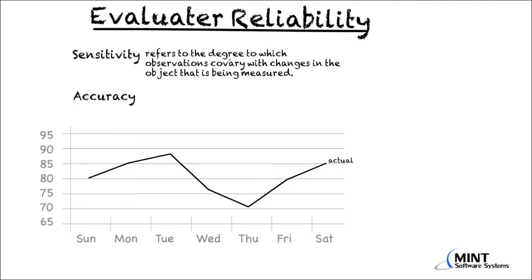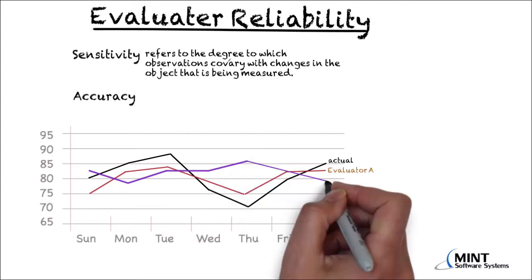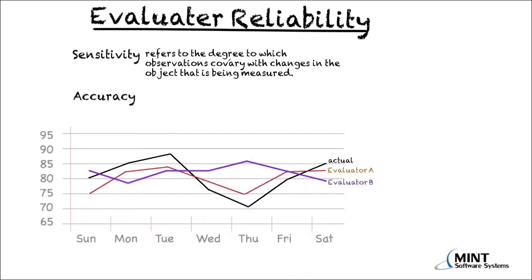Now let's see how Evaluator A is estimating the temperature. We can see that Evaluator A's estimates co-vary very closely with the true temperature. Whereas Evaluator B deviates almost randomly from the true temperature. We would conclude that Evaluator A is more sensitive to temperature variations than Evaluator B, and in this sense, Evaluator A is more reliable than Evaluator B.